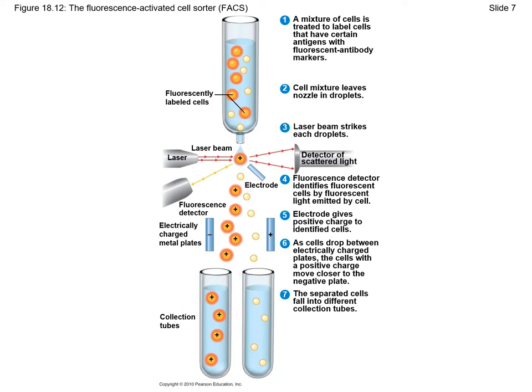One common application for FACS machines is to help monitor the health of HIV-positive individuals. HIV targets the CD4 positive cells, which are the T helper cells. When a person is HIV positive, they talk about their CD4 count to maintain immunological health. To count the number of CD4 cells, blood is drawn from the individual. In the blood there are all sorts of white blood cells: neutrophils, B cells, T cells, CTLs, and CD4 T helper cells.